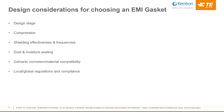One of the key components used to achieve EMI shielding for radiated emissions is the conductive EMI gasket. There are many types of gaskets available, so we will now discuss the design considerations for choosing an EMI gasket. These will cover: the design stage, gasket compression, shielding effectiveness, dust and moisture sealing, galvanic corrosion, and regulations and compliance.